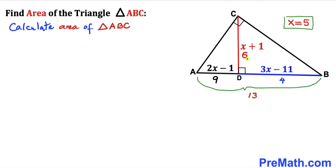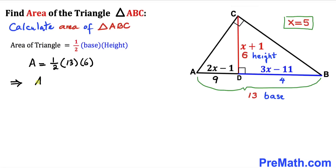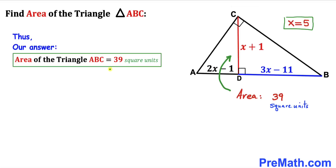Now let's calculate the area of triangle ABC. Using the formula: Area equals one-half times base times height. Base AB equals 13 and height CD equals 6, so Area equals one-half times 13 times 6 equals 39 square units. That's the area of triangle ABC. Thanks for watching and please don't forget to subscribe to my channel for more exciting videos.